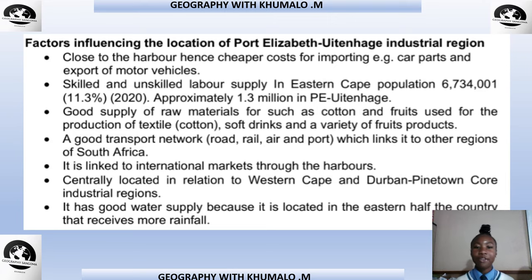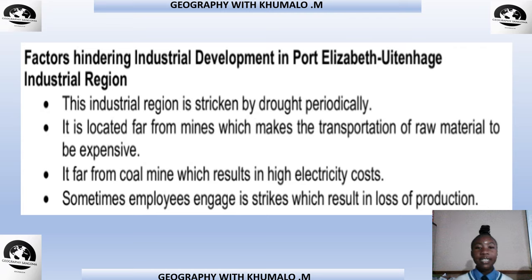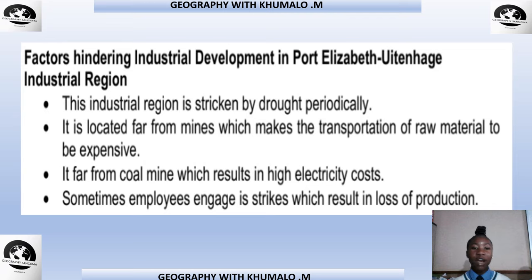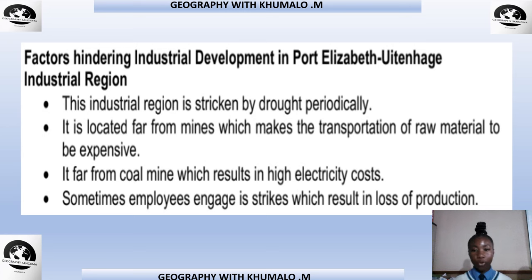The Port Elizabeth Winterhaven region is centrally located relative to the Western Cape and Durban-Pinetown industrial regions, and has a good water supply as it is located in the eastern half of the country that receives more rainfall. Factors hindering industrial development include: periodic drought, location far from mines making raw material transportation expensive, high electricity costs due to distance from coal mines, and employee strikes resulting in loss of production.